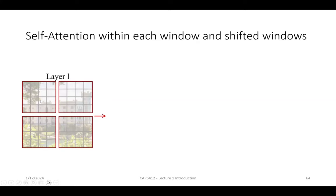Results are also shown on ImageNet-22K, demonstrating the same performance gains. On object detection using Mask R-CNN, and on semantic segmentation using ADE20K, the Swin Transformer again surpasses previous methods. In summary: ViT was the first vision transformer but required a huge dataset of 300 million images; Swin Transformer uses window attention and performs well across multiple tasks including object detection and segmentation.